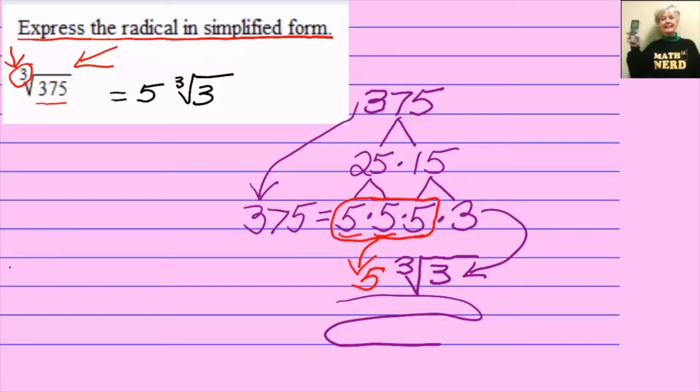Notice how powerful the index is. It tells us to look for numbers and letters that repeat the number of times of the index. For instance, for index 2 we're looking for numbers that repeat twice, for index 3 we're looking for numbers that repeat 3 times, for index 4 we're looking for numbers that repeat 4 times, and so on.